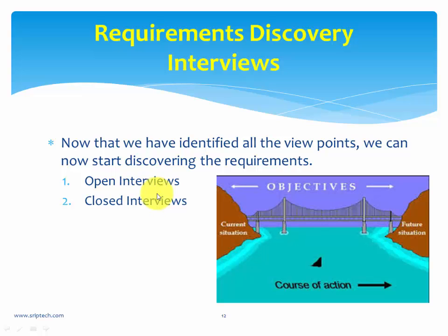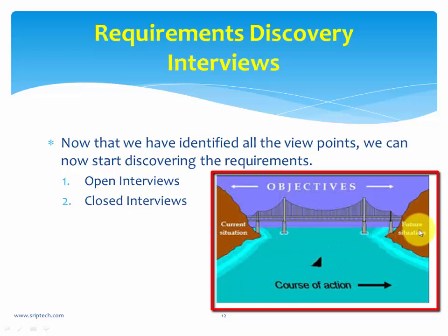There are two types of interviews: open and closed. In an open interview, you directly go and talk to the stakeholder and ask about their pain areas. They will tell you the current situation and the desired future situation. For example, if you are computerizing a library, the current situation is that everything is done manually — book issuing, fine collection, fine calculation — all prone to errors. The requirement is to automate everything. You discover that through open interviews.